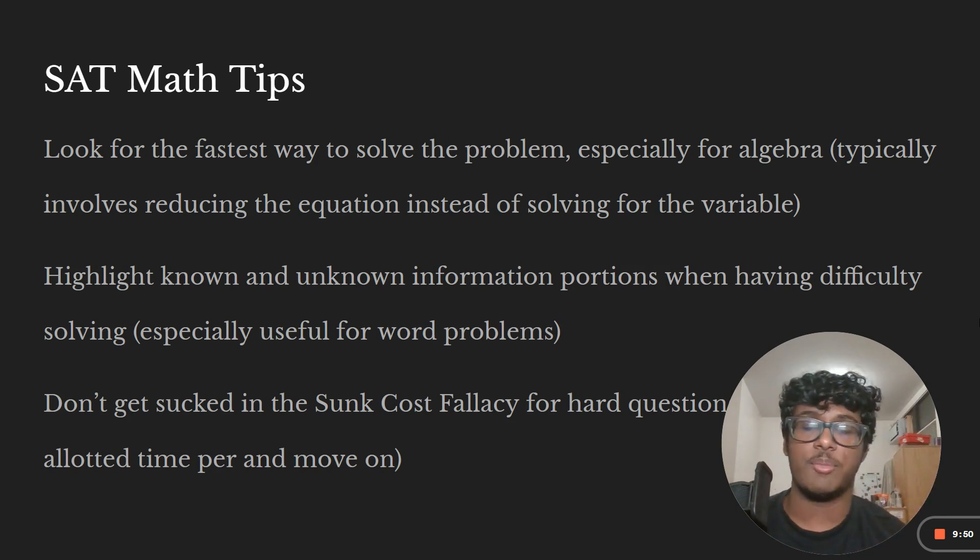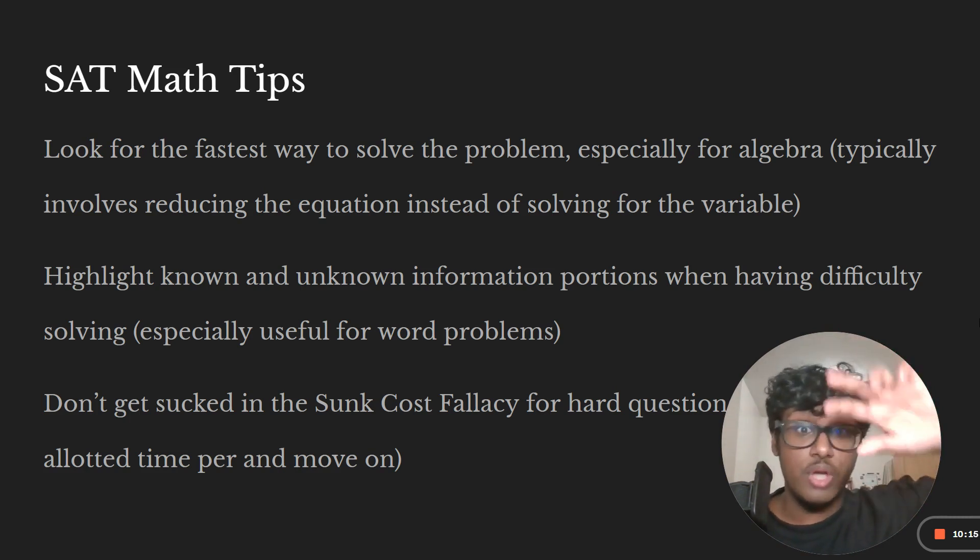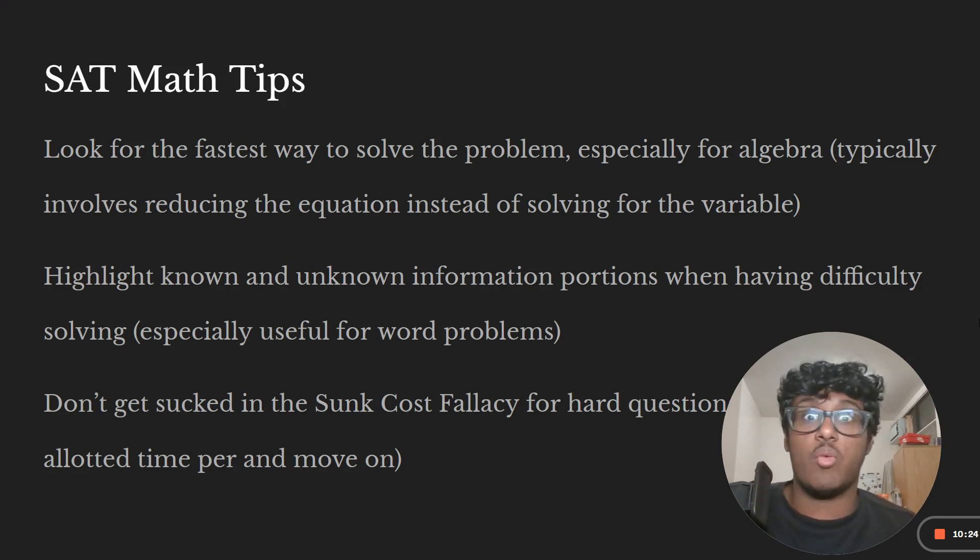Highlight known and unknown information portions when you have hard questions. And that basically means every time you have a hard word problem and you don't know where to start, start by writing all the information that you do know, all the information that you don't know and the information you need to get. And then continuously try to push all the unknown information into the known category by solving for them with what you do know. Because it's always possible from what you do know to solve. And if you don't think it is and you are missing a variable or you have two variables and you're unable to figure out how to get to that end information, then your goal should be what information have I missed from the problem. Because you probably missed something if you constantly feel that that's the case.